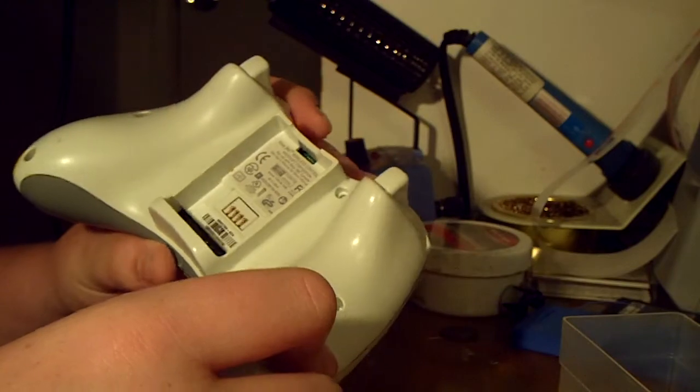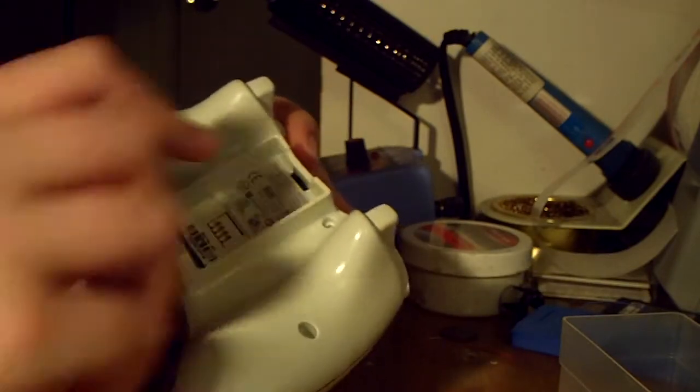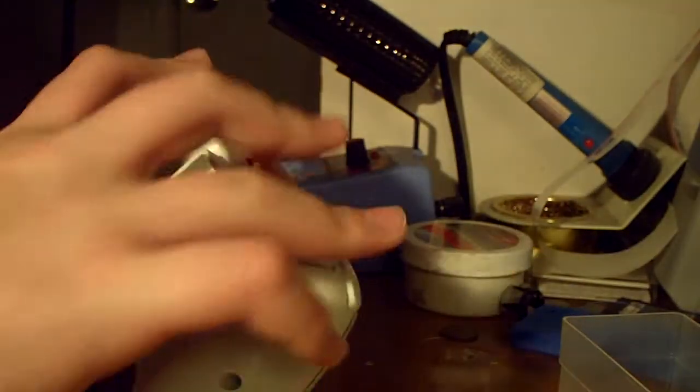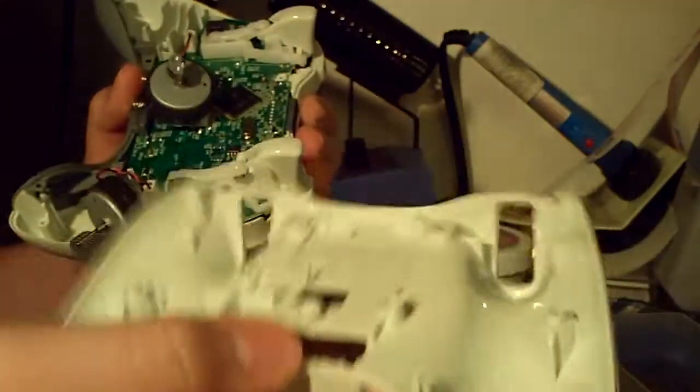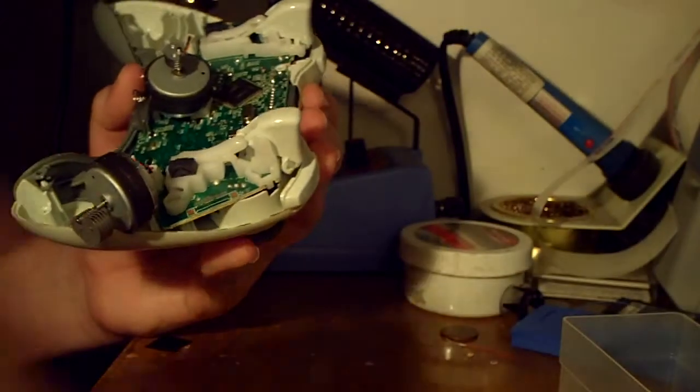Okay. Now that you have all the screws out, place your thumb right at the bottom here and then pull down on the triggers and then pull back towards your thumb. And then you pull off the back cover.